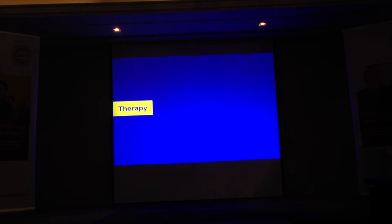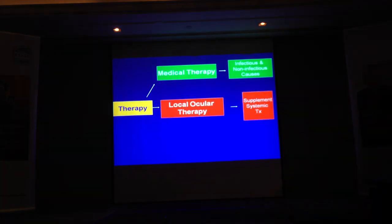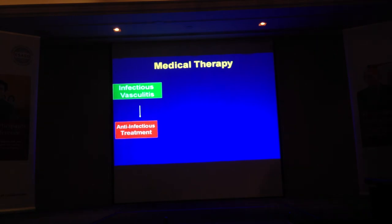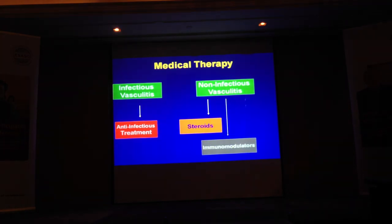Now we move to therapy. The therapy for retinovasculitis includes medical therapy for both infectious and non-infectious causes, local ocular therapy to supplement systemic treatment, and surgical therapy to control hemorrhage and retinal detachment. For infectious causes, if you know syphilis is causing the retinovasculitis, you use anti-infective treatment. After 14 days or 21 days of penicillin, it resolves. After six months of anti-TB medication, the patient should not have recurrence. For non-infectious vasculitis, you use steroids, immunomodulators, and biologics — often more than one.